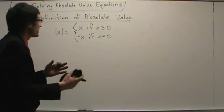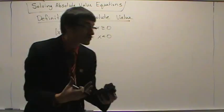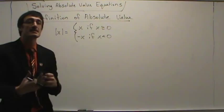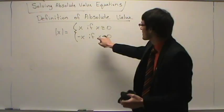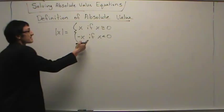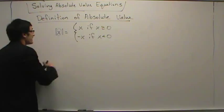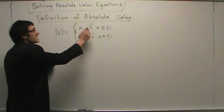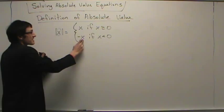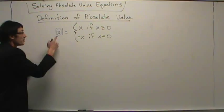The Definition of Absolute Value says: the absolute value of x equals x if x is greater than or equal to zero, and equals negative x — or the opposite of x — if x is less than zero. Before this class, if I asked what absolute value means, you'd probably say it's the distance from zero, and that's correct. The geometric definition is the distance from zero, because absolute value represents distance. But this is the precise definition. It says: the absolute value of something x is itself if it's positive, and is the opposite of itself if x is negative.